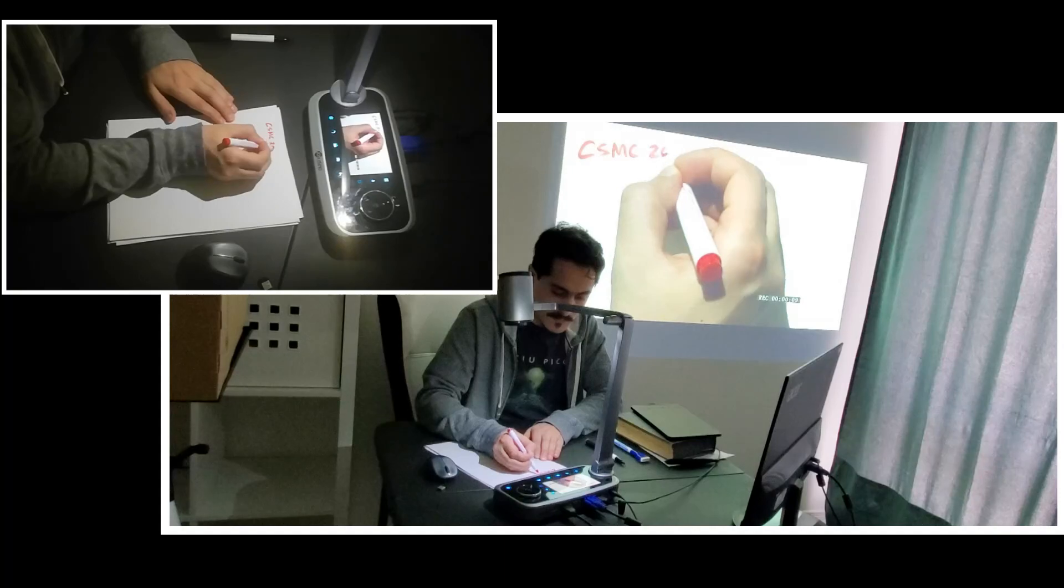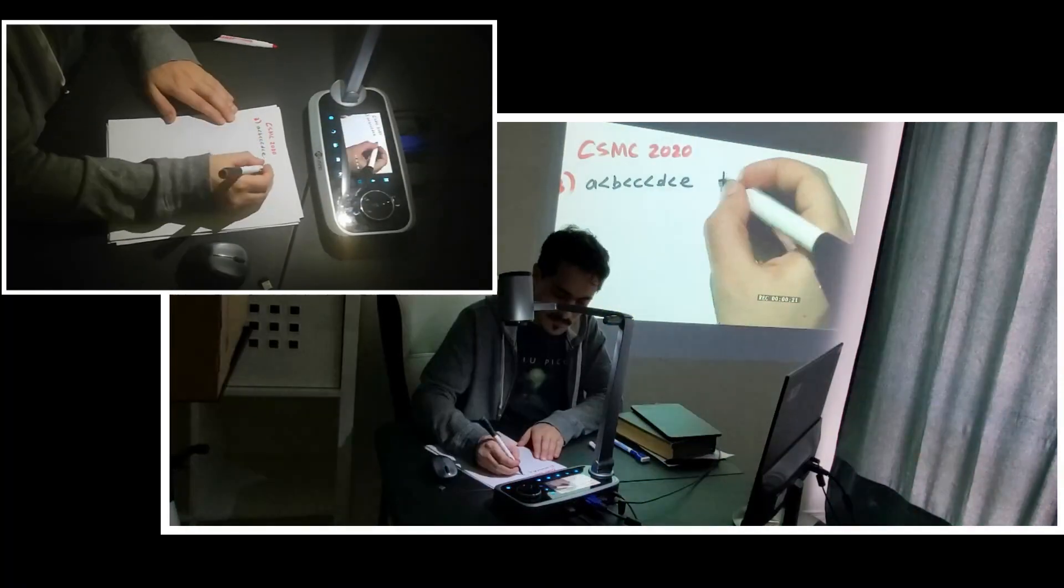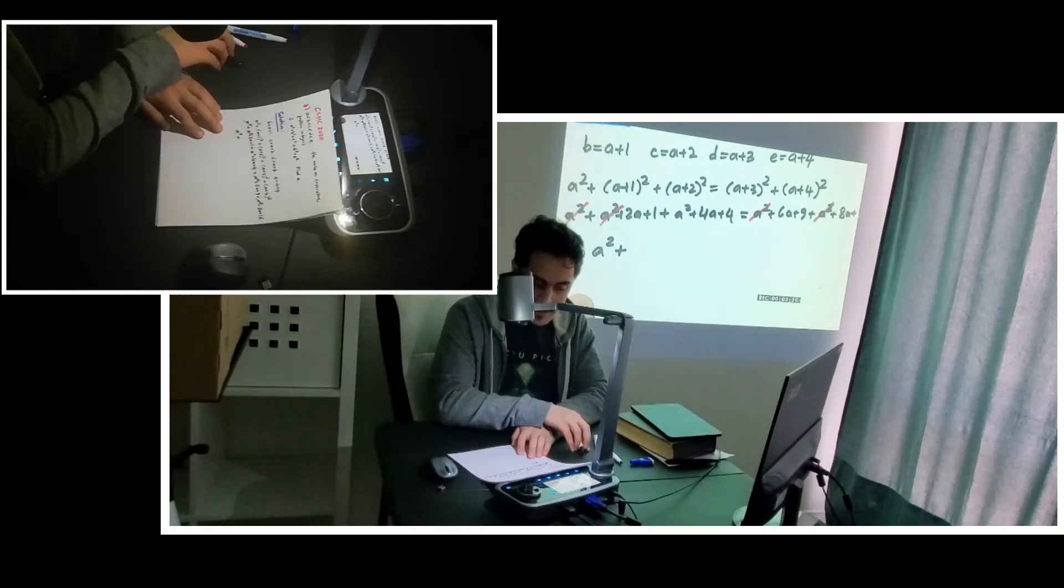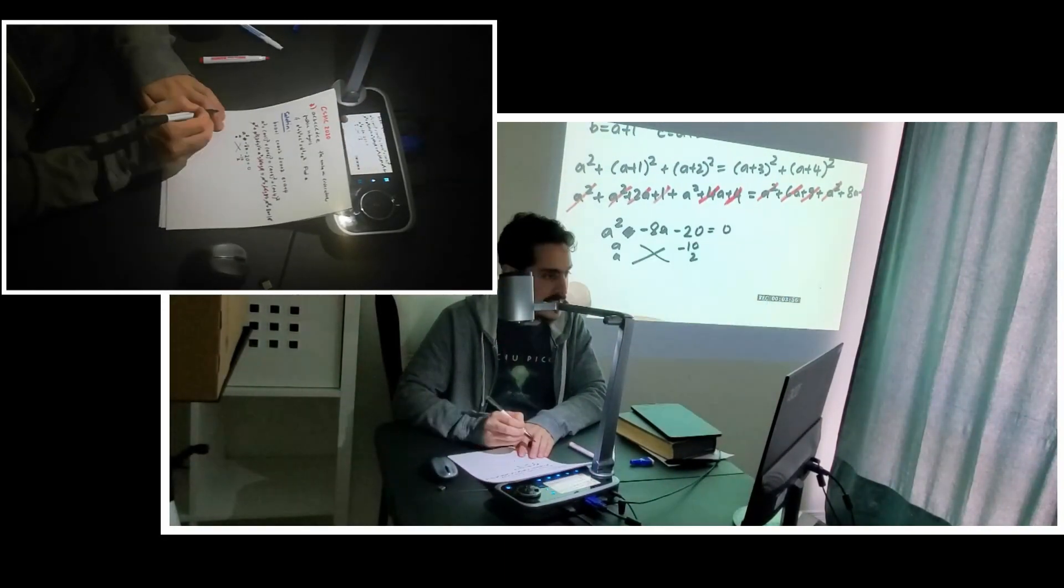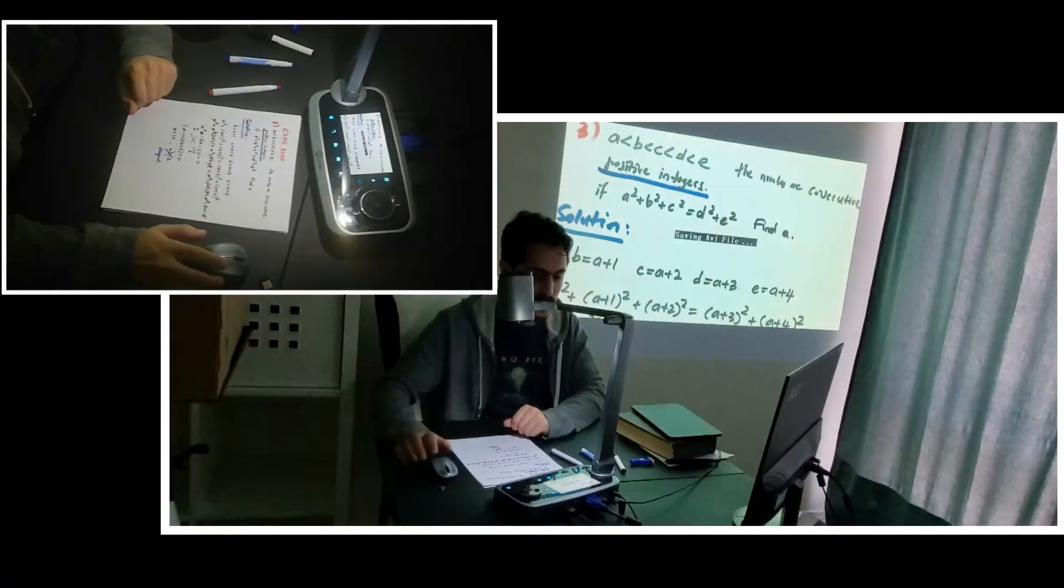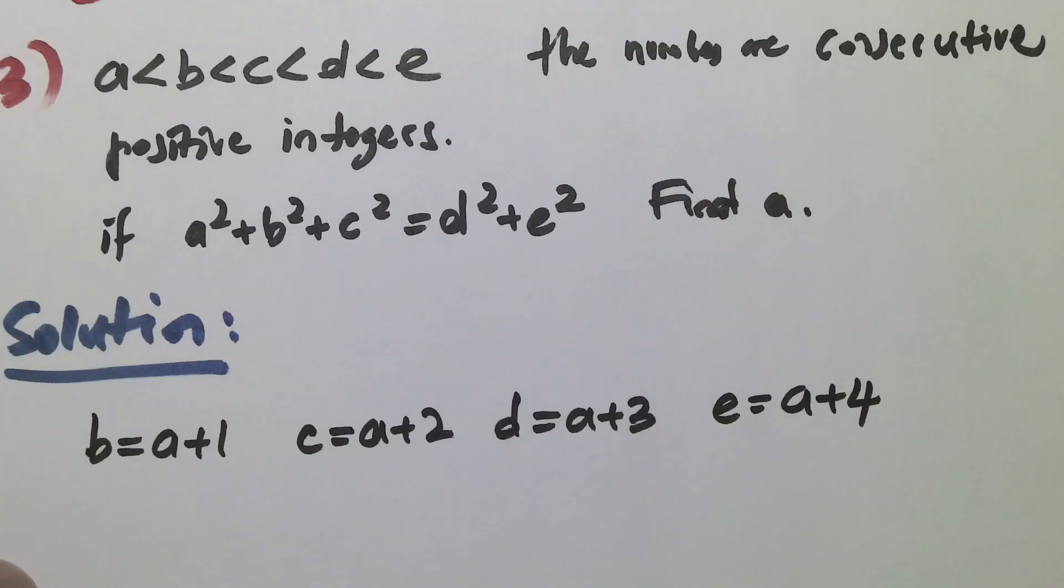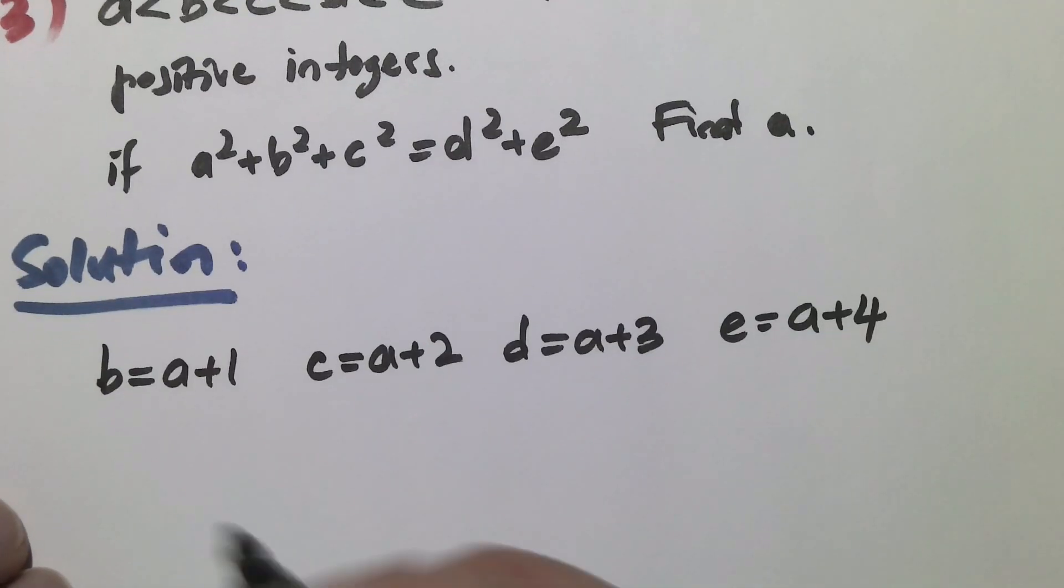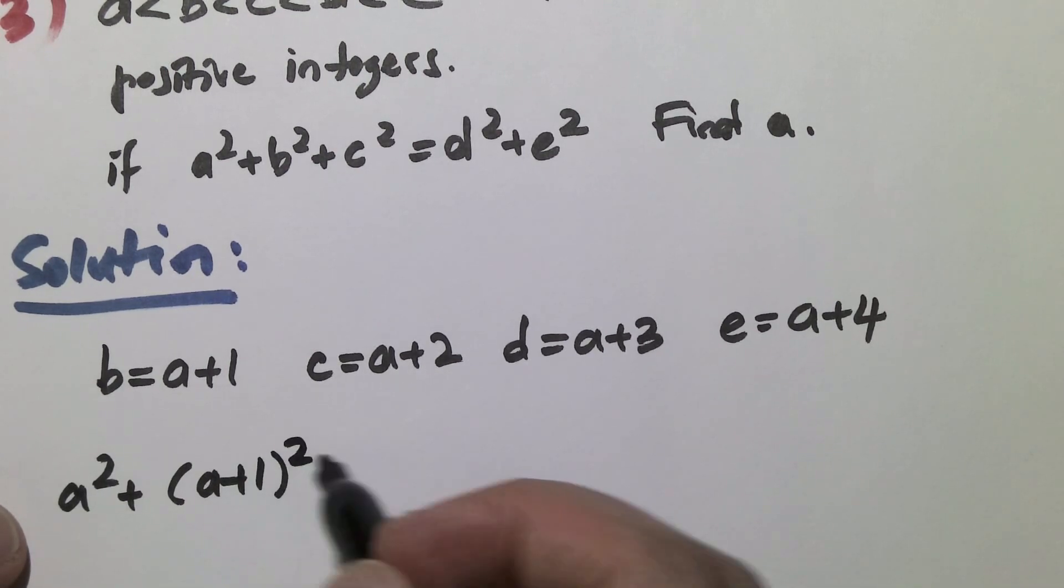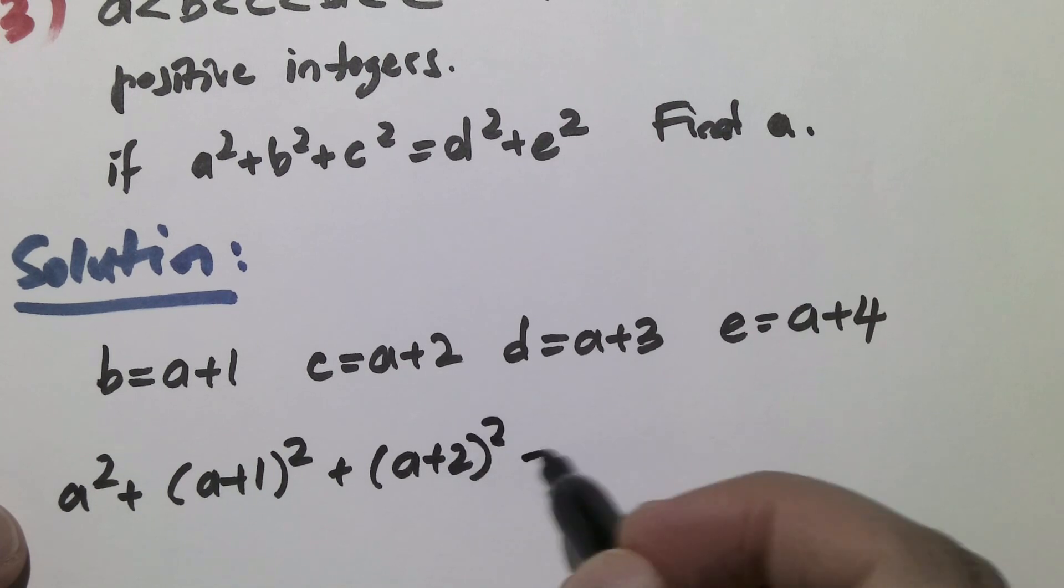And finally, I am solving a question, speaking at the same time. And the built-in microphone V1XS has picks up the audio and it is recorded on this SD memory card. And let's see how it looks like. We can say that B is A plus 1, C is A plus 2, D is A plus 3, and E is A plus 4. And we can rewrite the equation as A square plus A plus 1 square plus A plus 2 square.